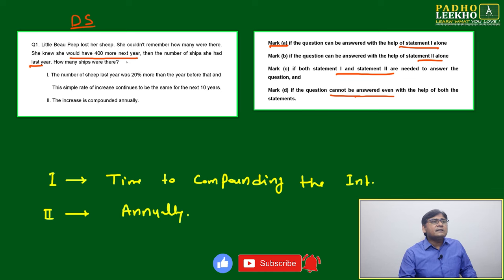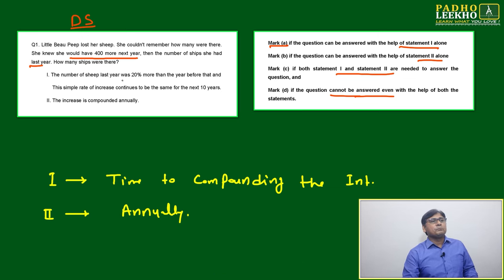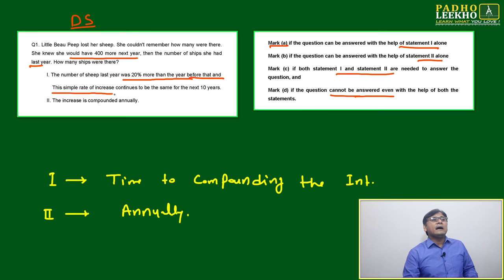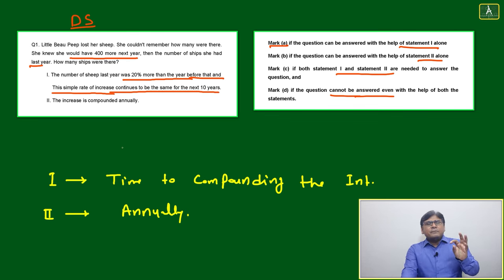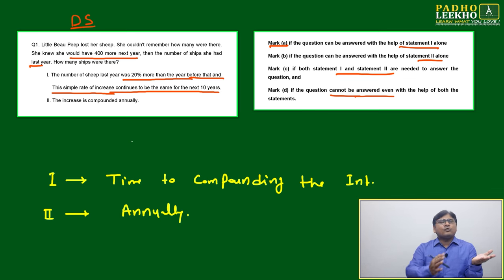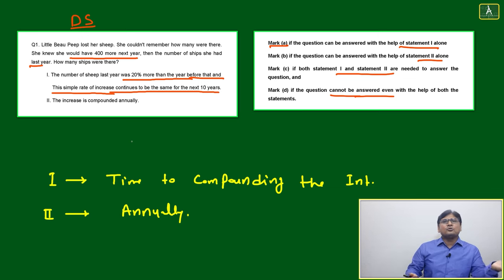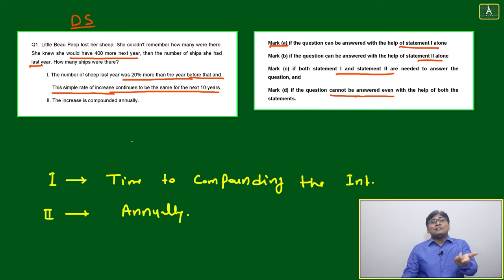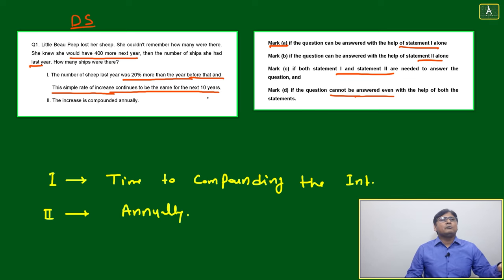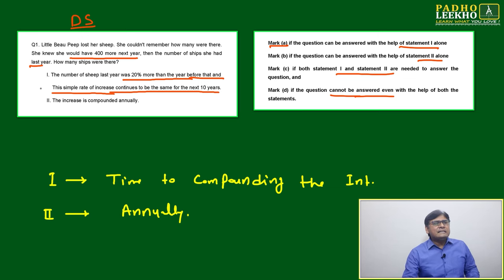Statement 1: The number of ships last year was 20% more than the year before, and the same rate of increase continues for the next 10 years. By looking at it, it seems sufficient — since next year is 400 and the 20% rate is given, we can do a reverse calculation to find this year's and last year's numbers.